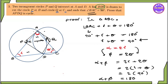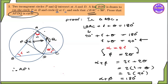So alpha plus theta is 90 degrees. Therefore the third point B, A, Q, D — so B, D, Q, A. This means A, B, D, Q are concyclic. So A, B, D, Q are cyclic.